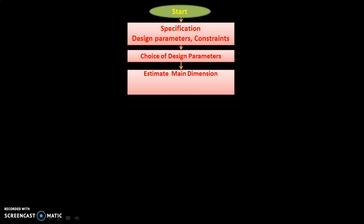After estimating our main dimensions, in the next step we estimate our air gap length. Air gap length is very important. We have certain factors which indicate that a larger air gap length is recommended in some conditions, while power factor and magnetizing current considerations say that a smaller air gap length is recommended. Based on these factors, the designer has to estimate the air gap length.